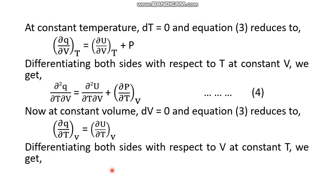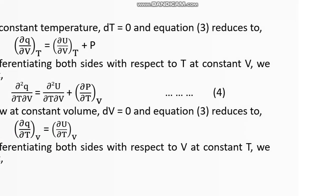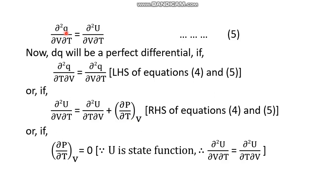We have (∂q/∂T)_V and (∂u/∂T)_V. Since ∂T is in the numerator, the next step is to differentiate with respect to volume keeping temperature constant. Differentiating both sides accordingly gives ∂²q/∂V∂T on the left-hand side, and ∂²u/∂V∂T on the right-hand side. This is equation number five.